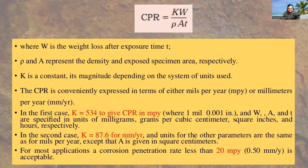W is the weight loss after the exposure time T. When the material is exposed to the open environment, how much weight is lost is noted by capital W. Rho and D represent the density and exposed specimen area. K is a constant that differs from material to material. The CPR is expressed in terms of MPY or millimeter per year.